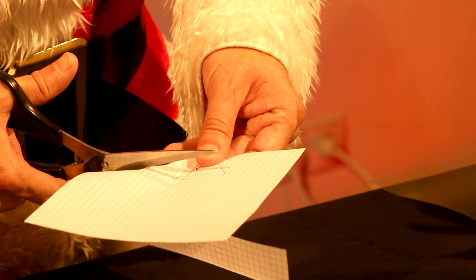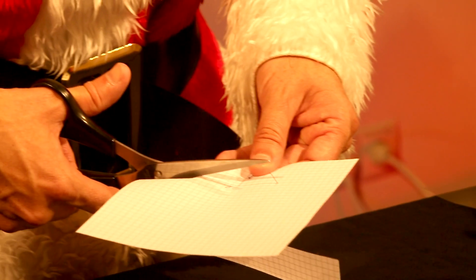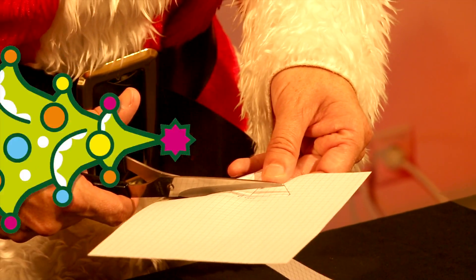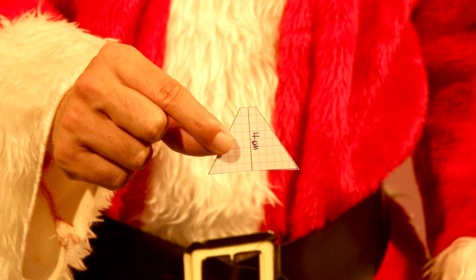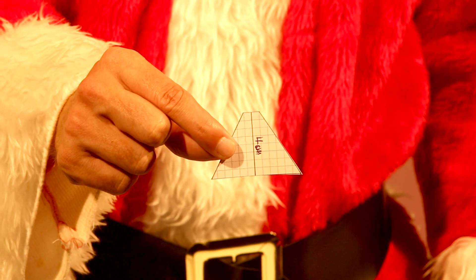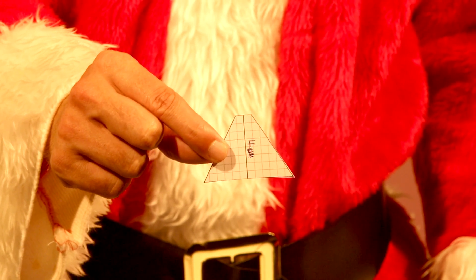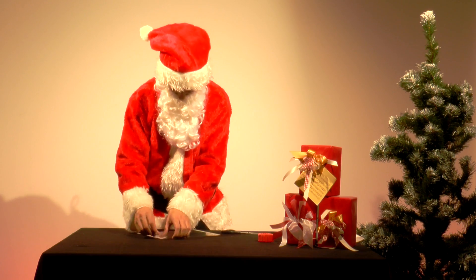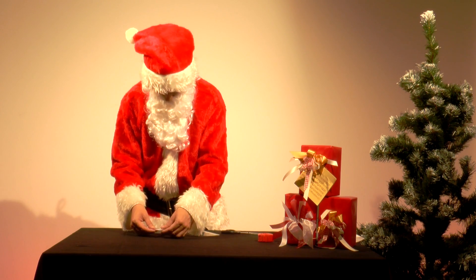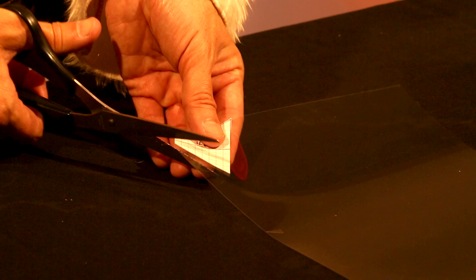He cuts it out and uses it as a template. He places it on a transparent film and cuts out four trapezia.